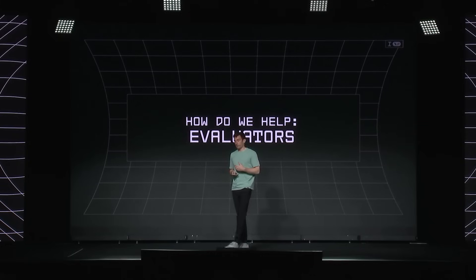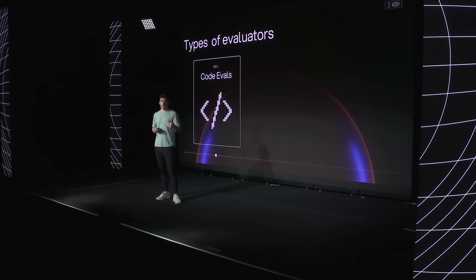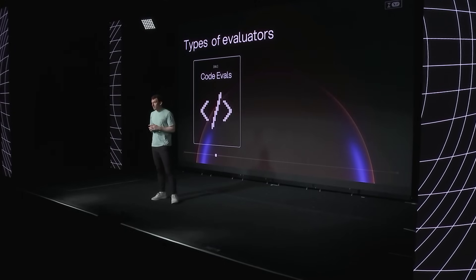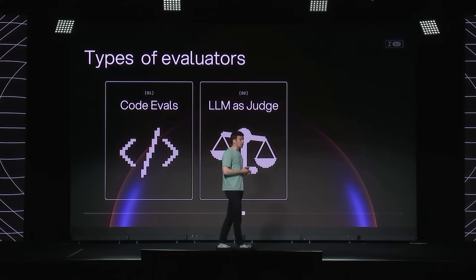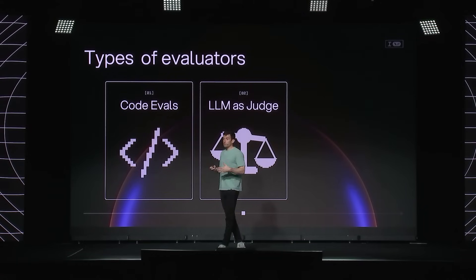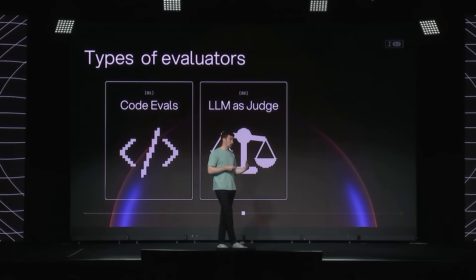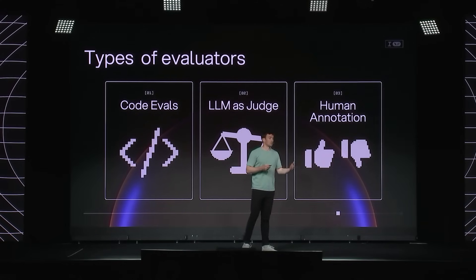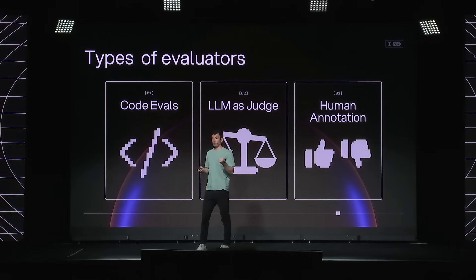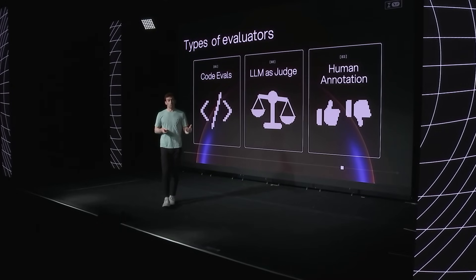Now let's talk about evaluators. There are a few different types. First is using code to evaluate things — exact match, regex, checking for valid JSON. These are great: they're deterministic, cheap, and fast to run. But they're oftentimes not representative of all the things you want to catch, especially with natural language responses. So we also see LLM-as-a-judge techniques, using an LLM to score the outputs of your agent. This is useful because it can handle more complex things, though it can be tricky to get started. The third type is good old human annotation — collecting thumbs up or thumbs down live from users, sending those to LangSmith, or having a human go in the background and use our annotation queues to score runs.